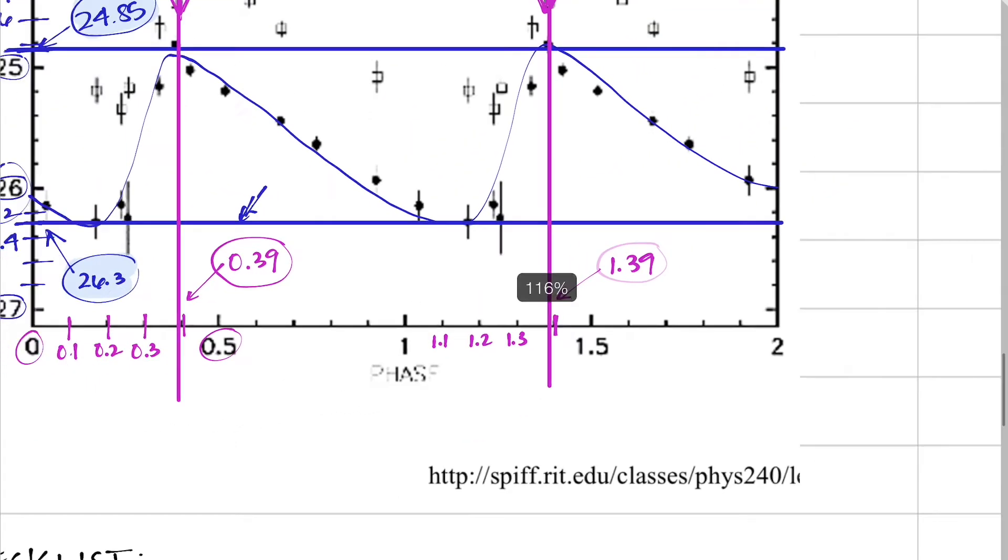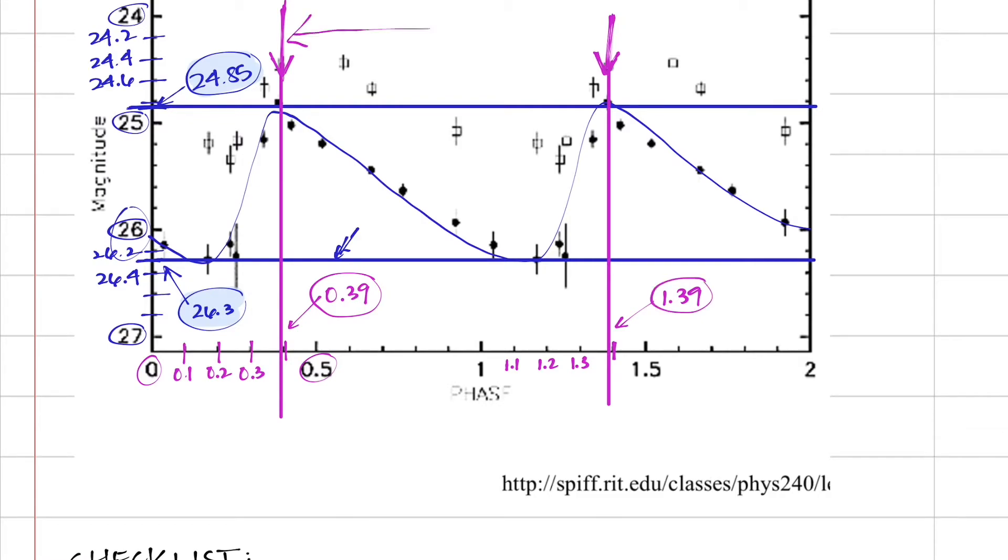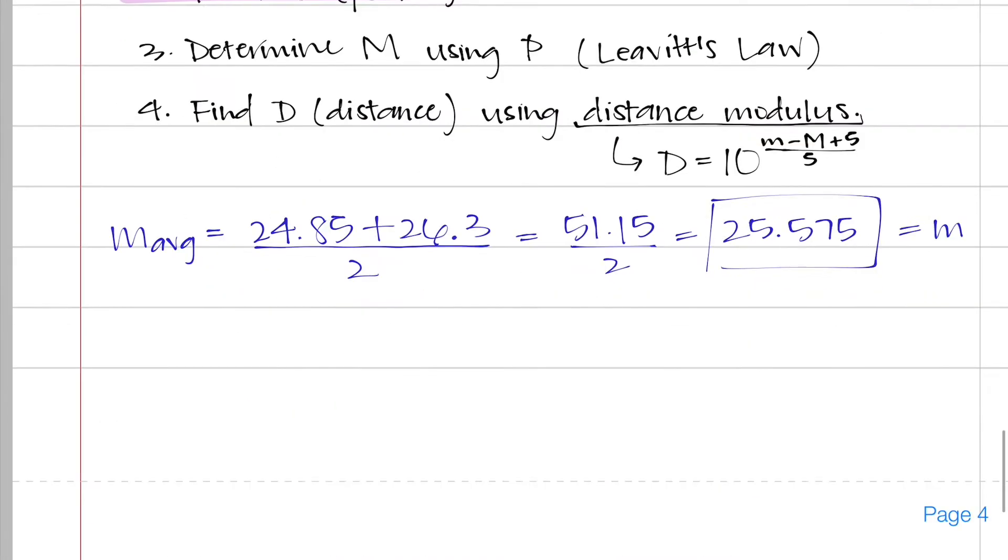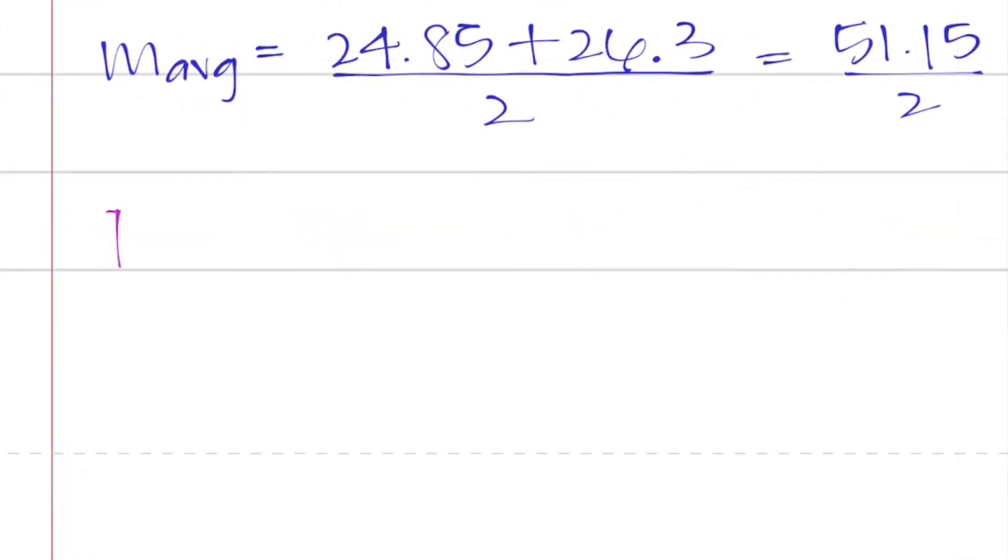So now the two values that I need to figure out how many days are between this and this point. I have to subtract this number from that number. So my period, capital P, is going to be 1.39 minus 0.39. So if I subtract those two numbers, I have exactly one day for the period of this Cepheid variable. So what that means is that this Cepheid variable is going from bright to dim to bright over a one day length of time.